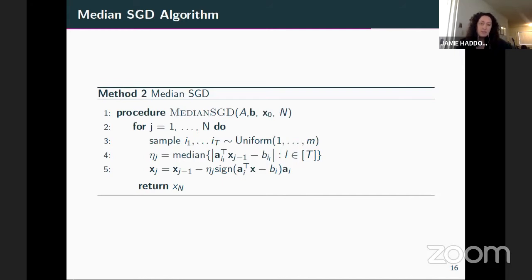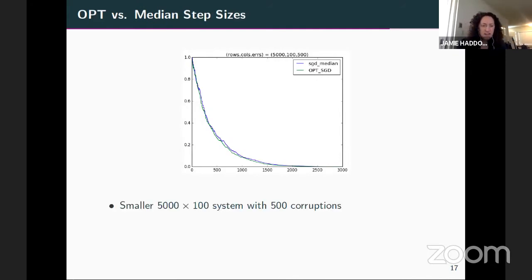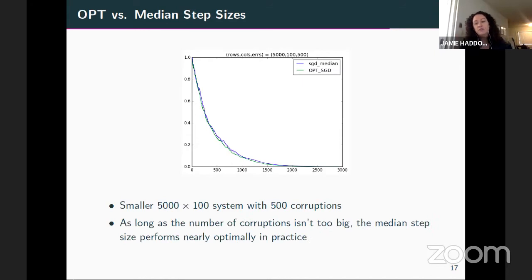The optimal step size for the L1 SGD step — trying to make progress toward the pseudo solution — is computable analytically as a function of the previous squared error. If you use this optimal step size, the error terms decrease in expectation. Of course, knowing the optimal step size is too much to hope for since that requires knowing the solution. But if you can approximate it within a small constant factor, you obtain a near-optimal guarantee.